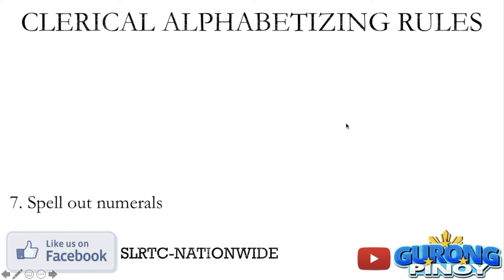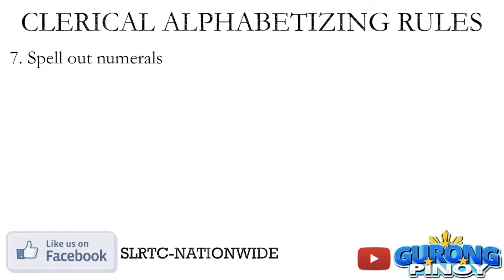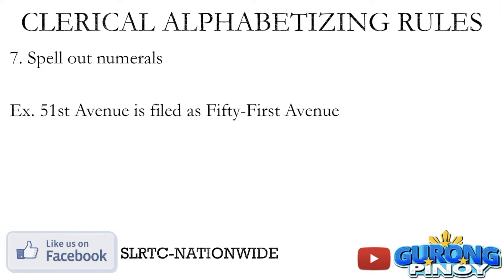Rule number seven: spell out numerals. If you have numbers in your names such as 51st Avenue, this is going to be filed as Fifty-first Avenue. You need to spell out the numbers in words — hindi po pwedeng nasa numbers lang sila.